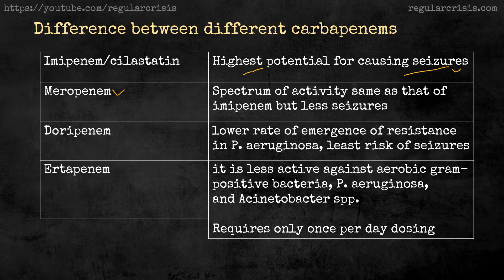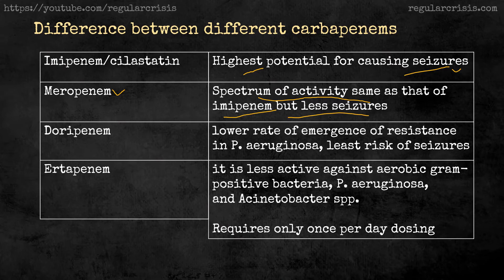Meropenem has the same spectrum of activity as imipenem, but the risk of seizures with meropenem is lower compared to imipenem. That is why meropenem is a better choice than imipenem when you are more concerned about the risk of seizures in a particular patient.